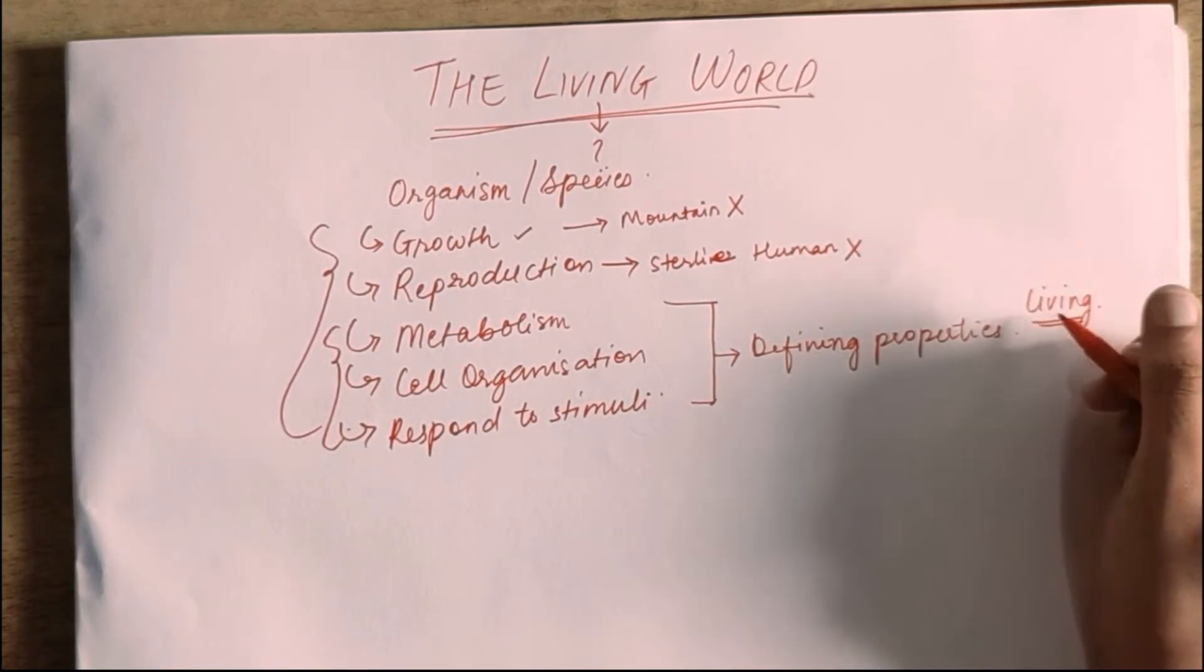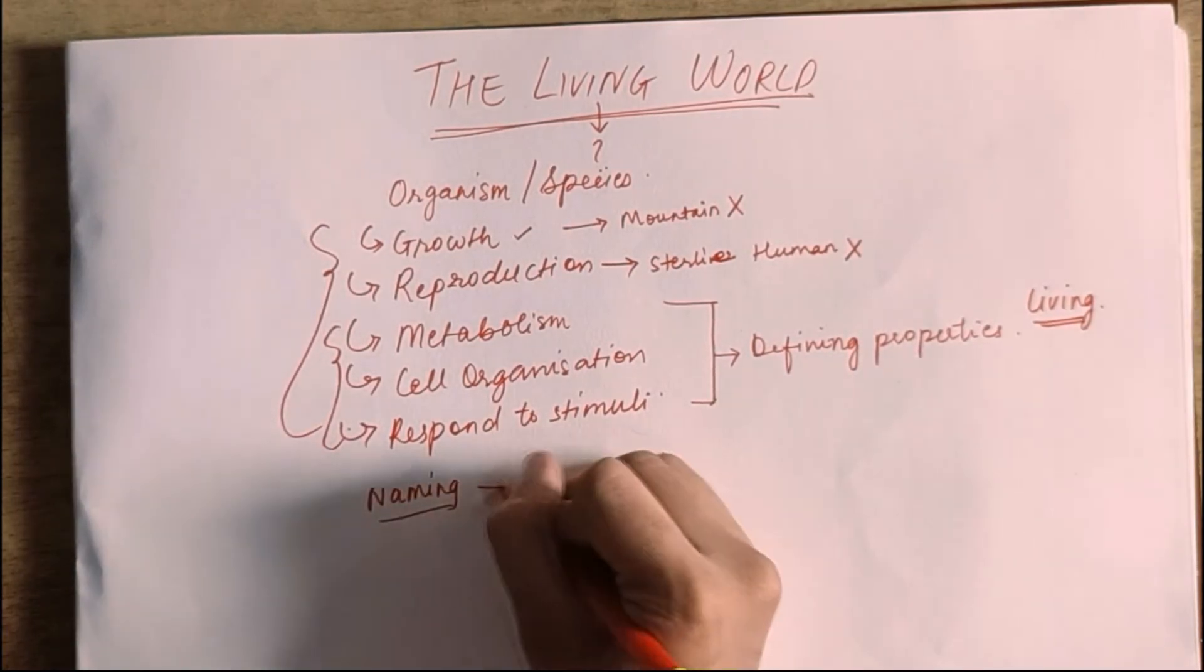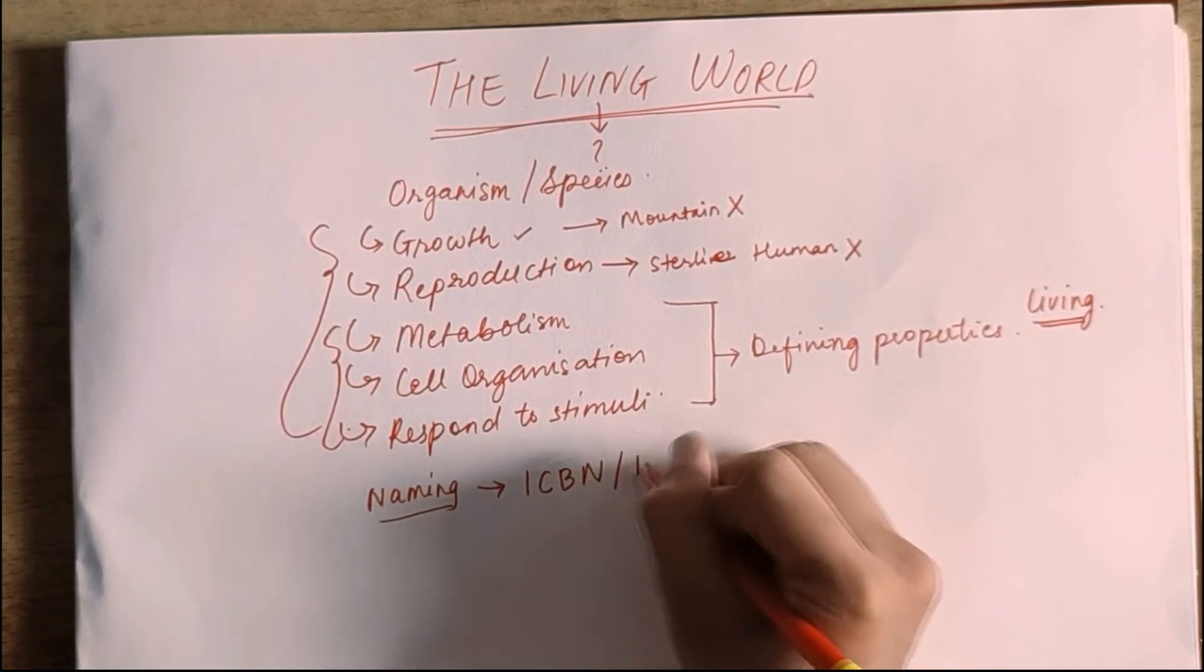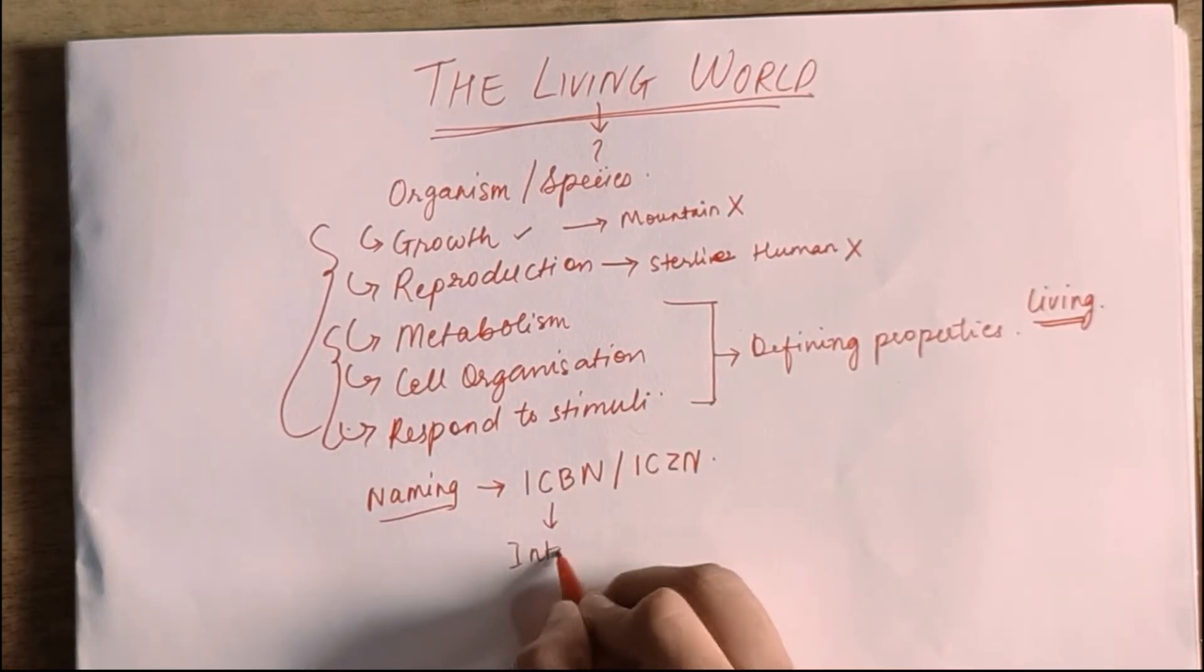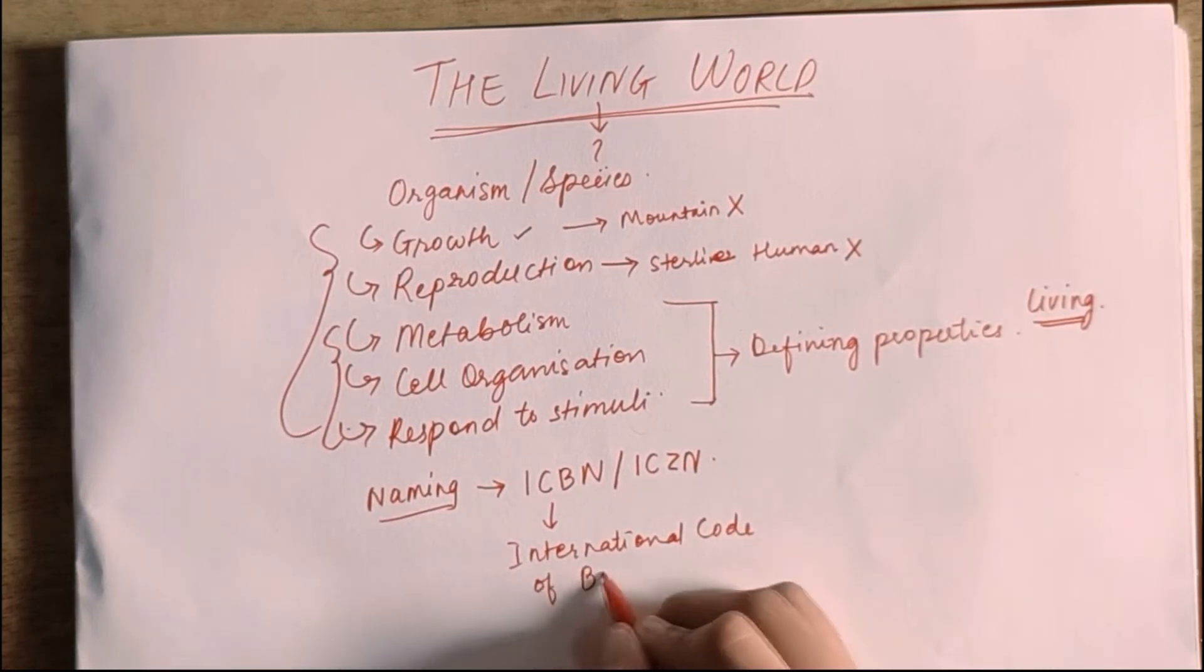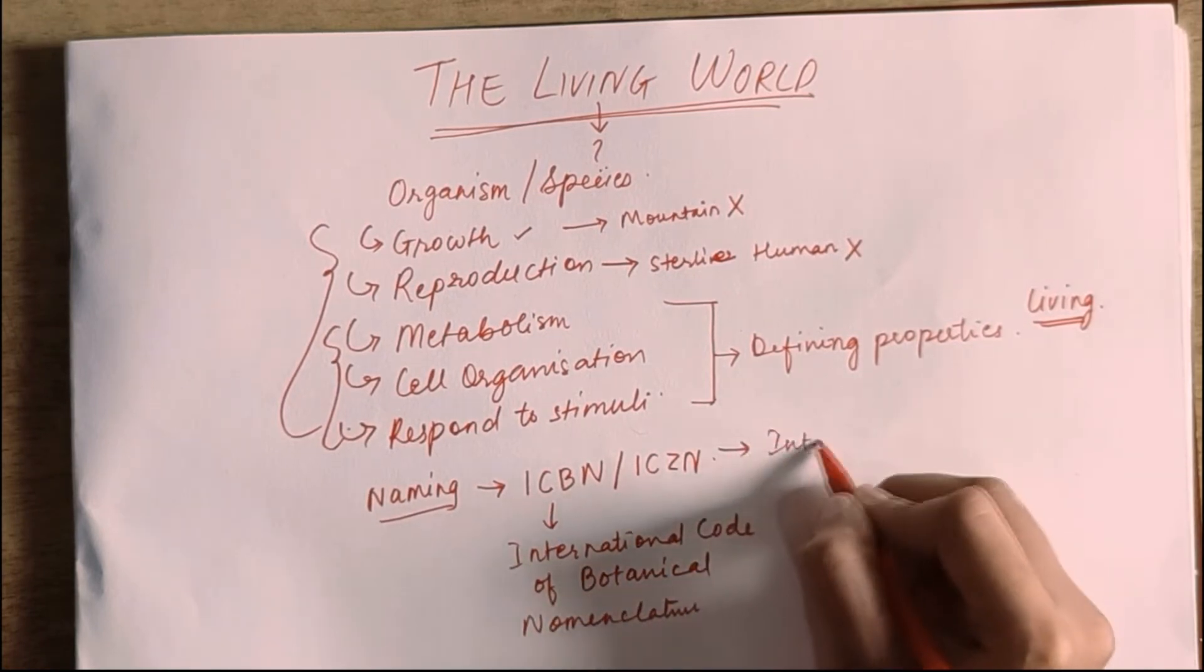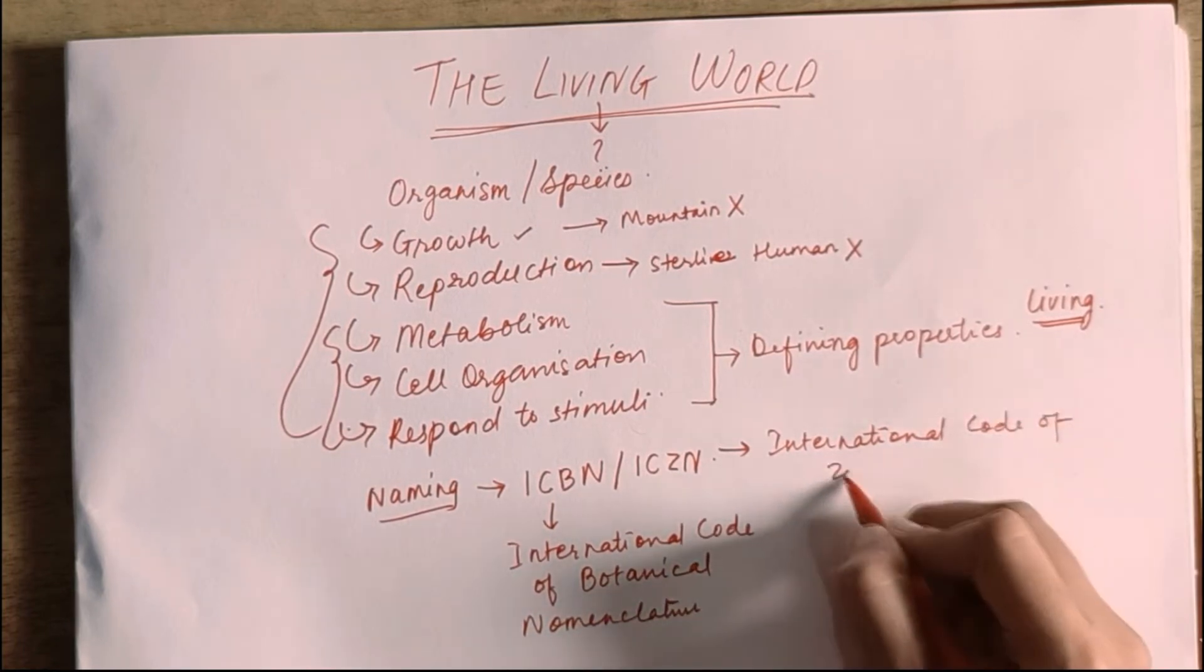Now, how do we name species? How do we name things? For naming things, we have set rules. And what rules have been set? ICBN - International Code of Botanical Nomenclature, and ICZN - International Code of Zoological Nomenclature.